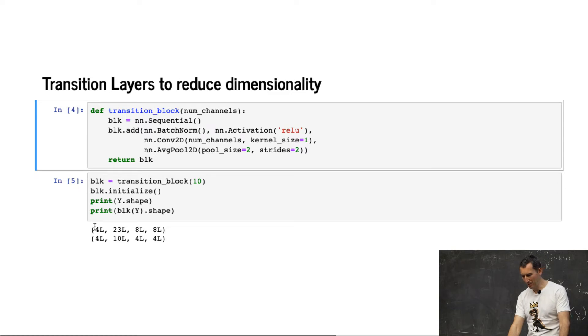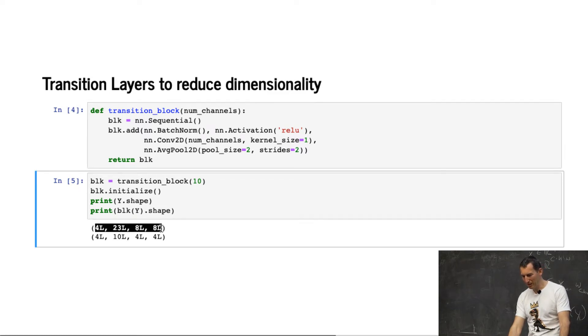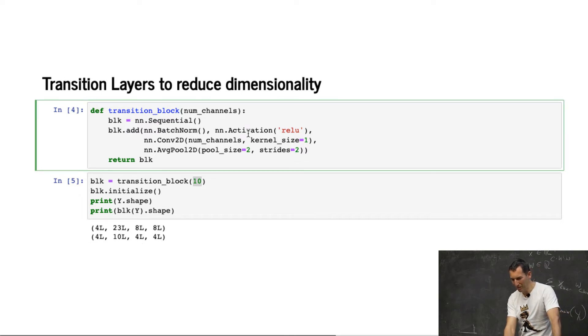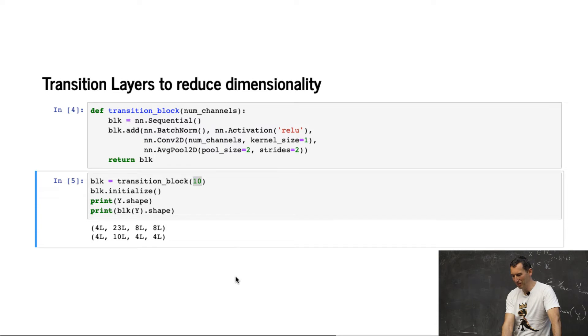And you can see what happens if I look at the input before. I had 23 dimensions, and then afterwards, if I have a transition block that chops it down to 10, I get 10 channels after that. Simple batch norm, ReLU, then a convolution that reduces number of channels. And then I use average pooling in this case, but could have used different pooling as well.